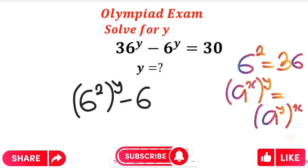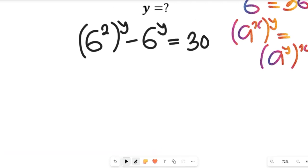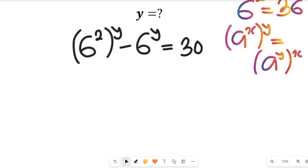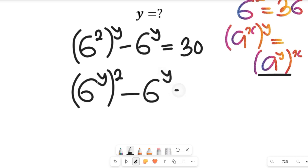Minus 6 to the power of y, and this will be equal to 30. Let's simplify further — applying that law of indices, we're going to have 6 to the power of y multiplied by 2, minus 6 to the power of y, and this will be equal to 30.